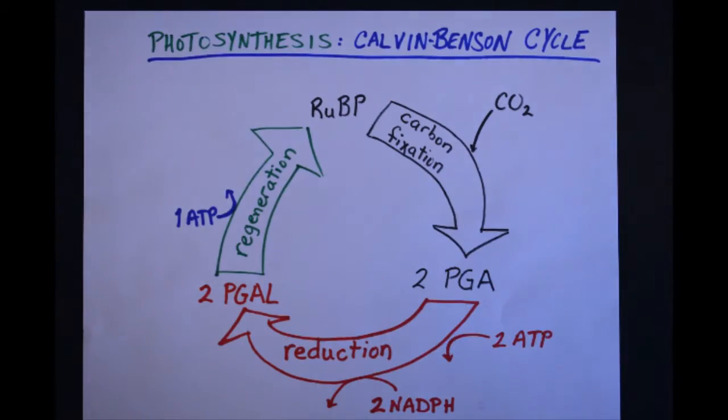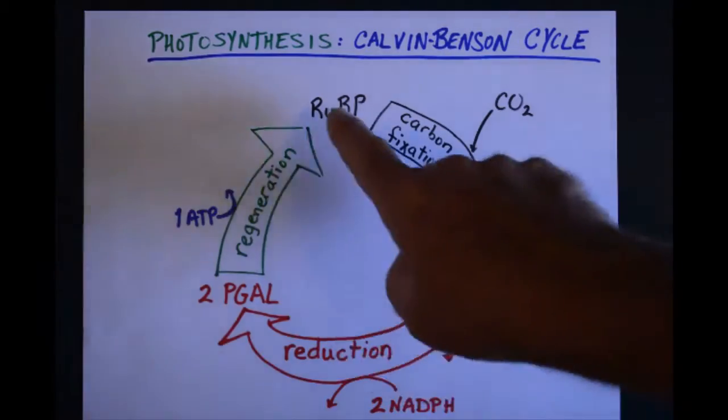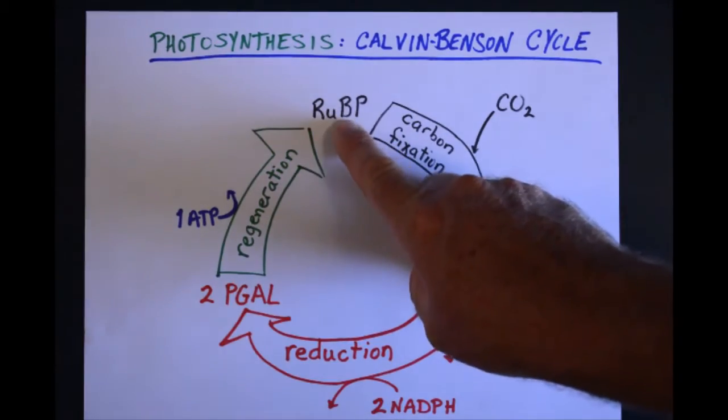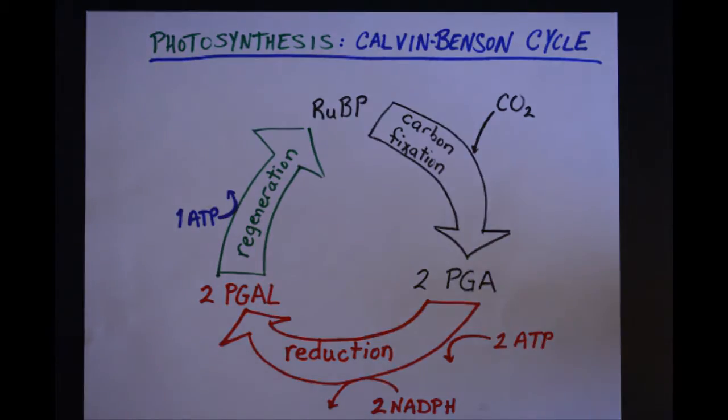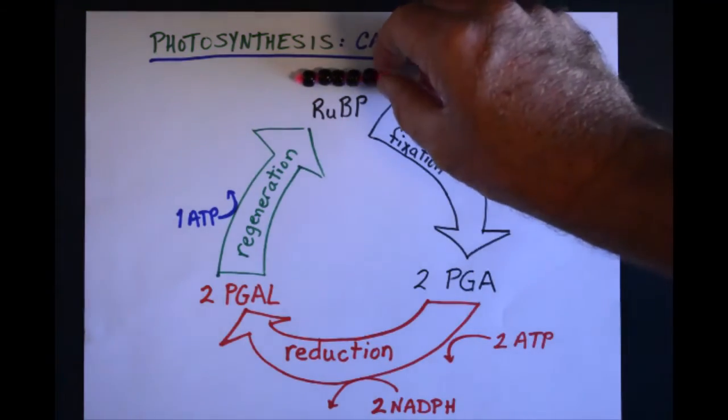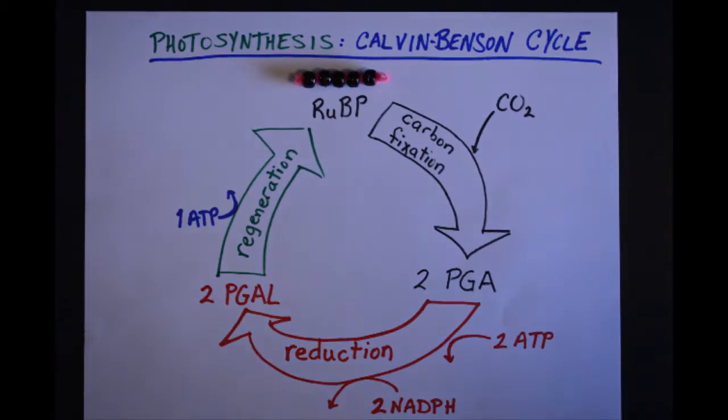I'm going to break it down into three stages and go over it that way. We can see that it is indeed a cycle. We're going to start here with the molecule ribulose bisphosphate. That is a five carbon sugar, not one you're that familiar with necessarily.